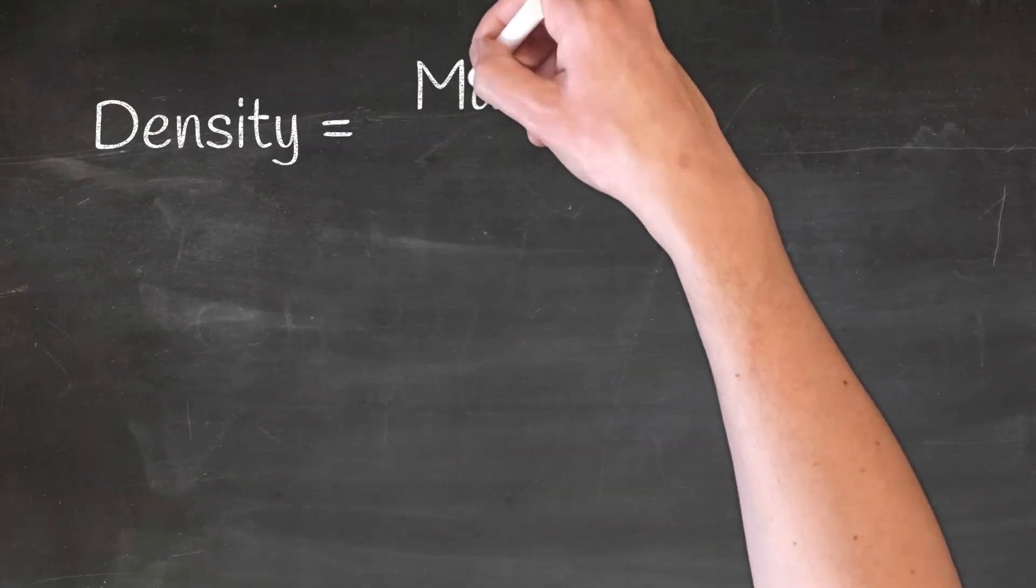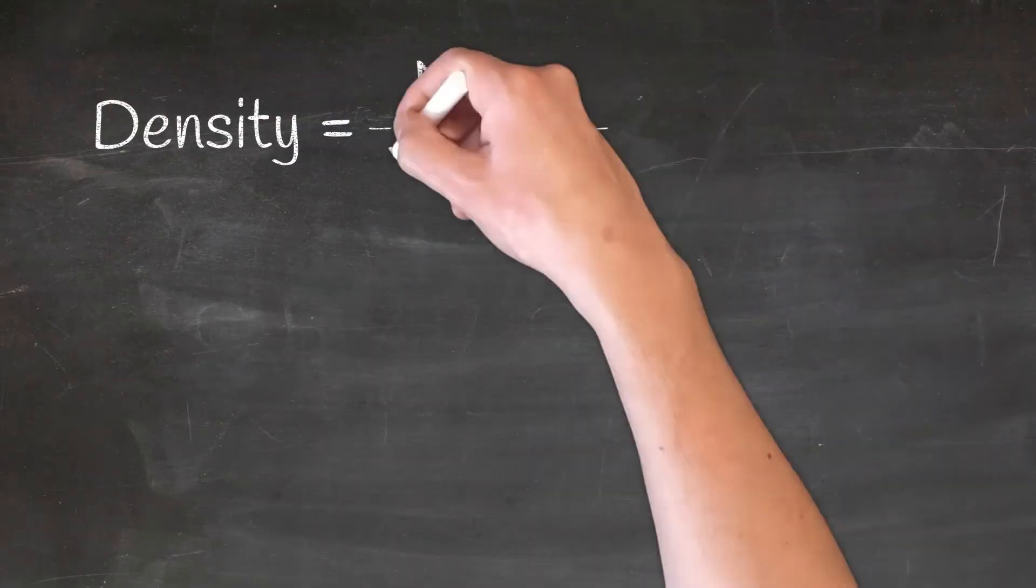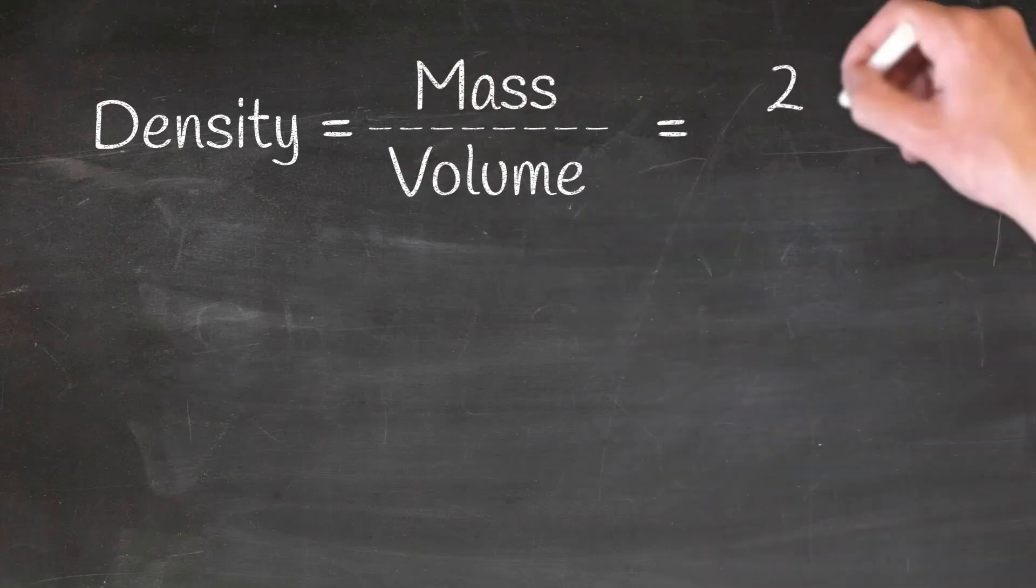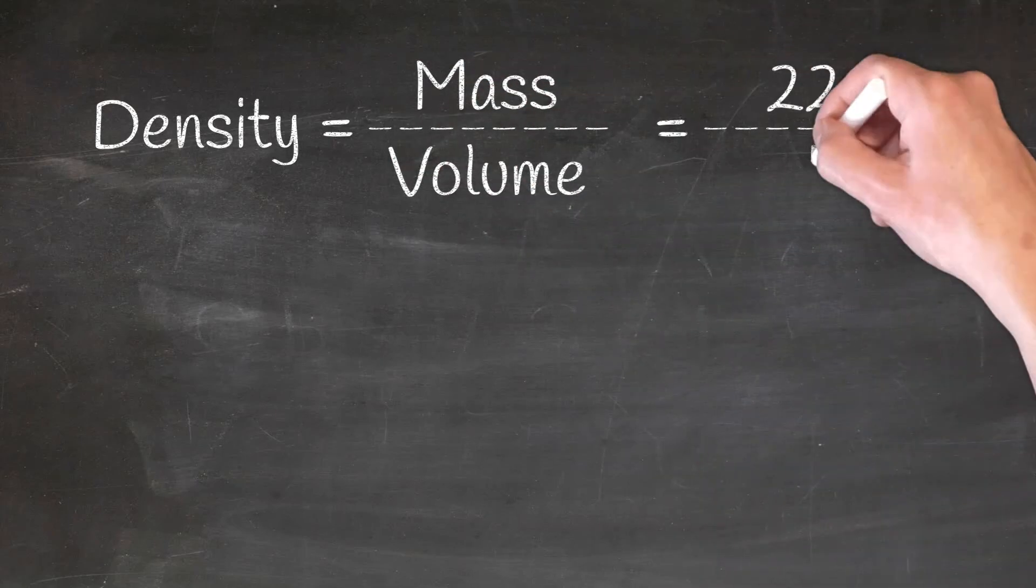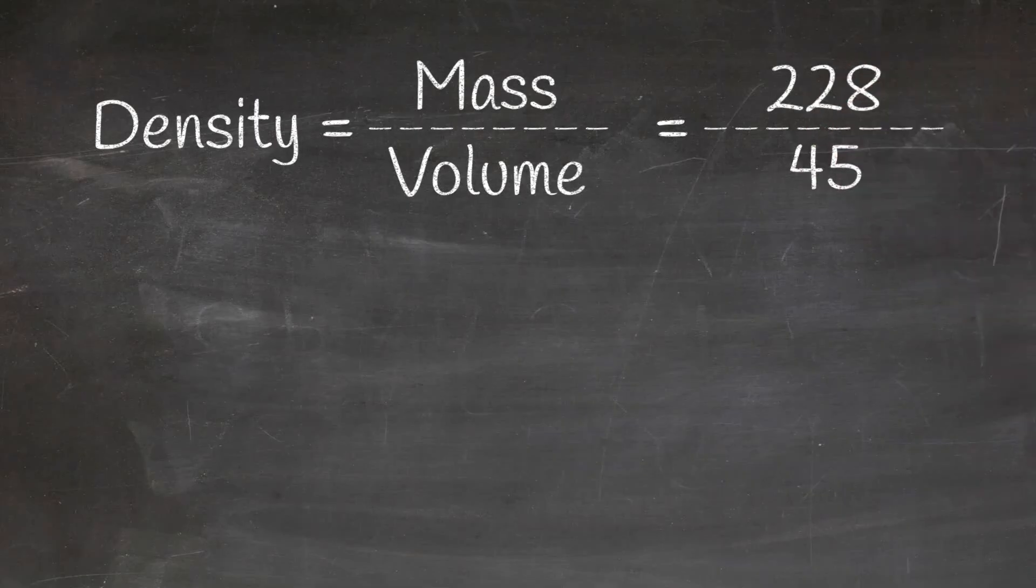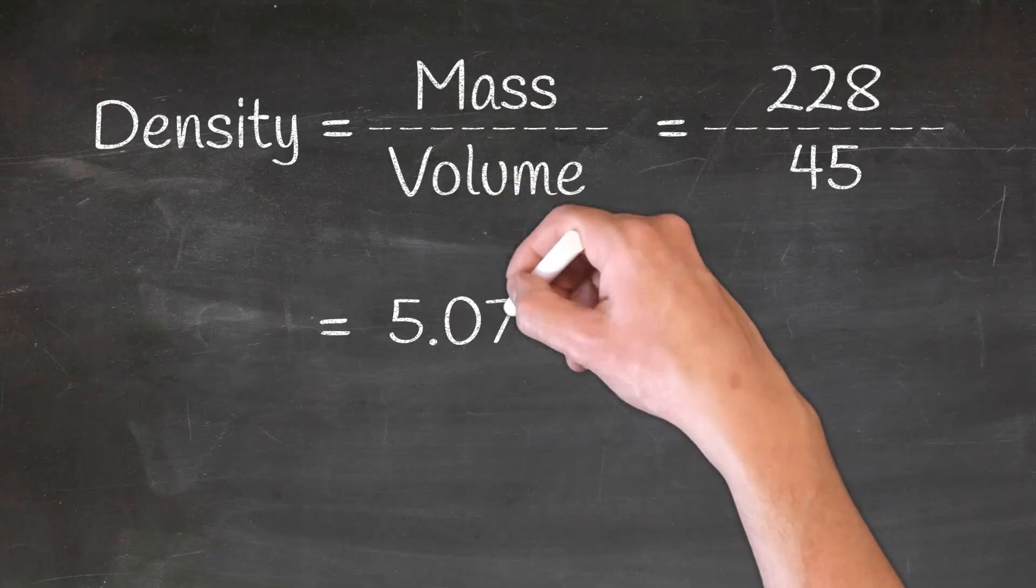We then simply need to substitute these numbers into our equation. So our mass was 228 grams and our volume was 45 cm³. Working this out gives us a density of 5.07 grams per cm³.